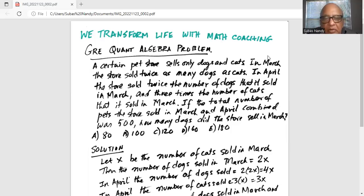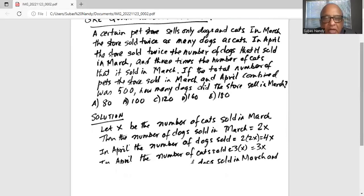If the total number of pets the store sold in March and April combined was 500, how many dogs did the store sell in March? So we have five options, possible answers.